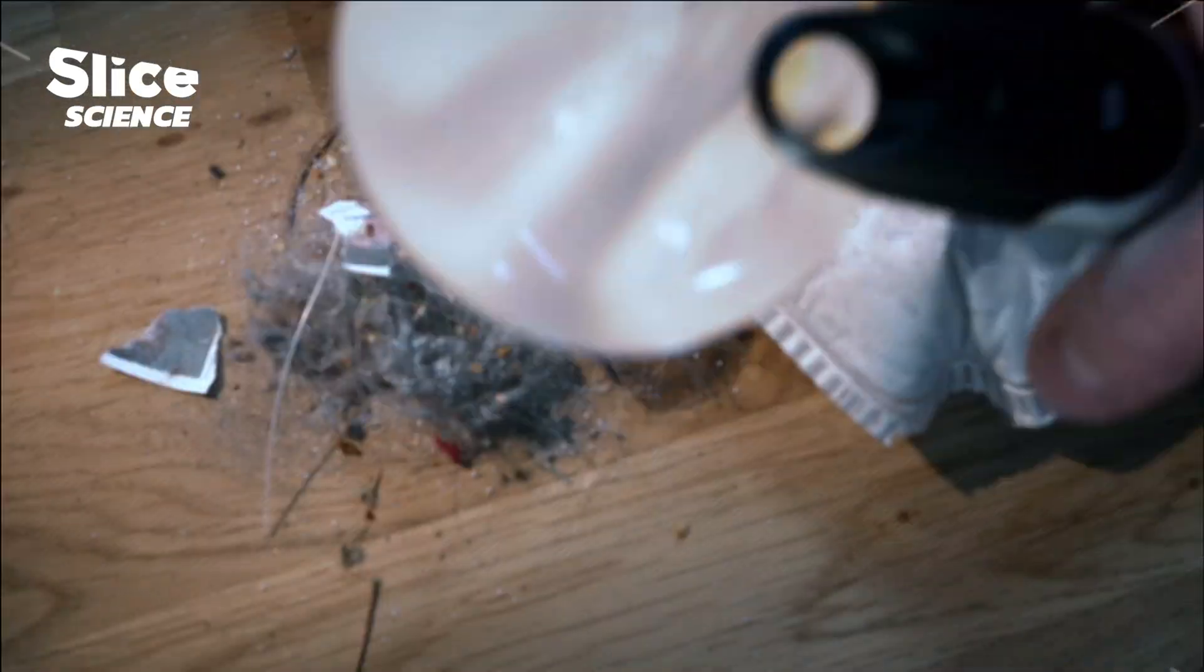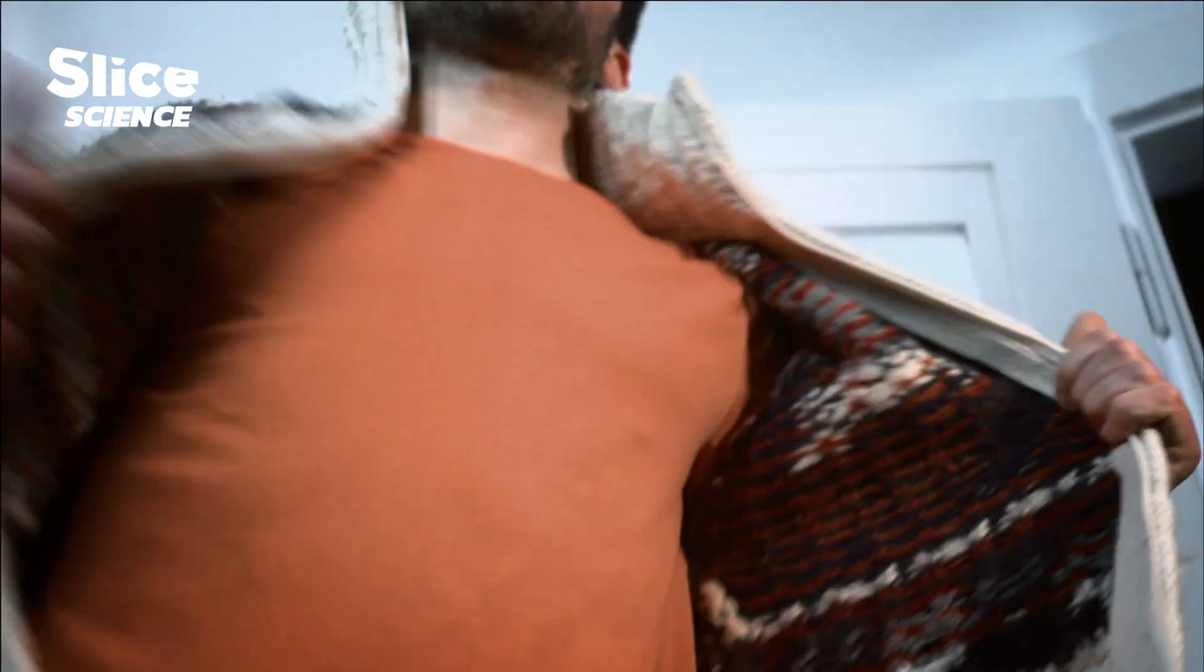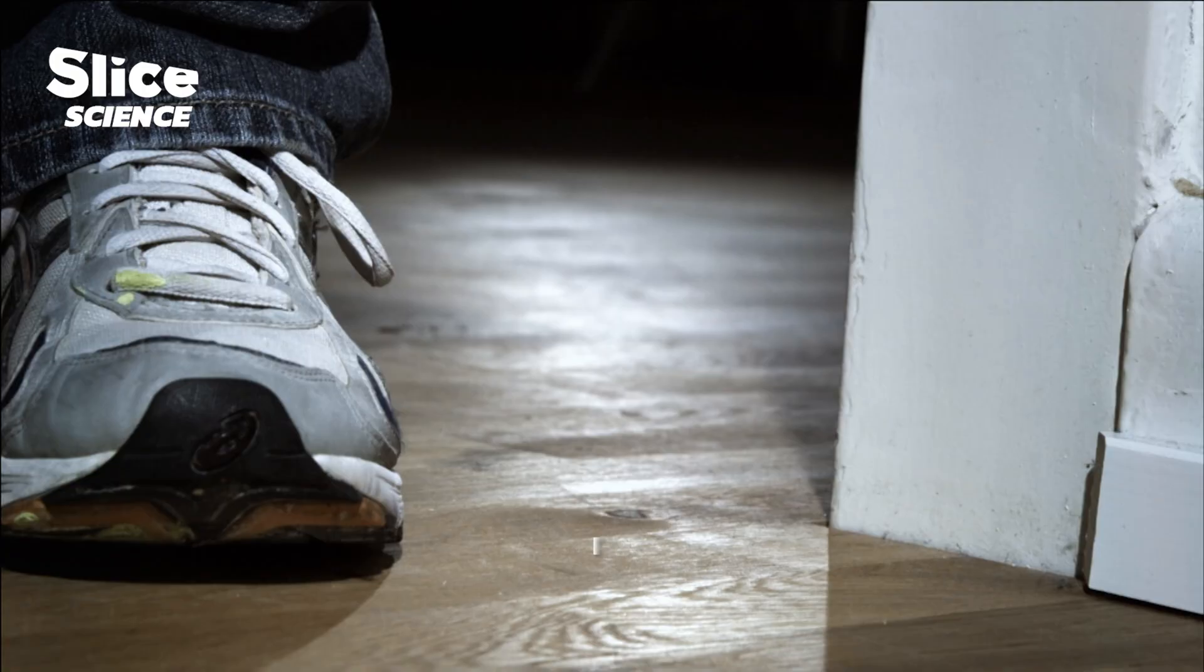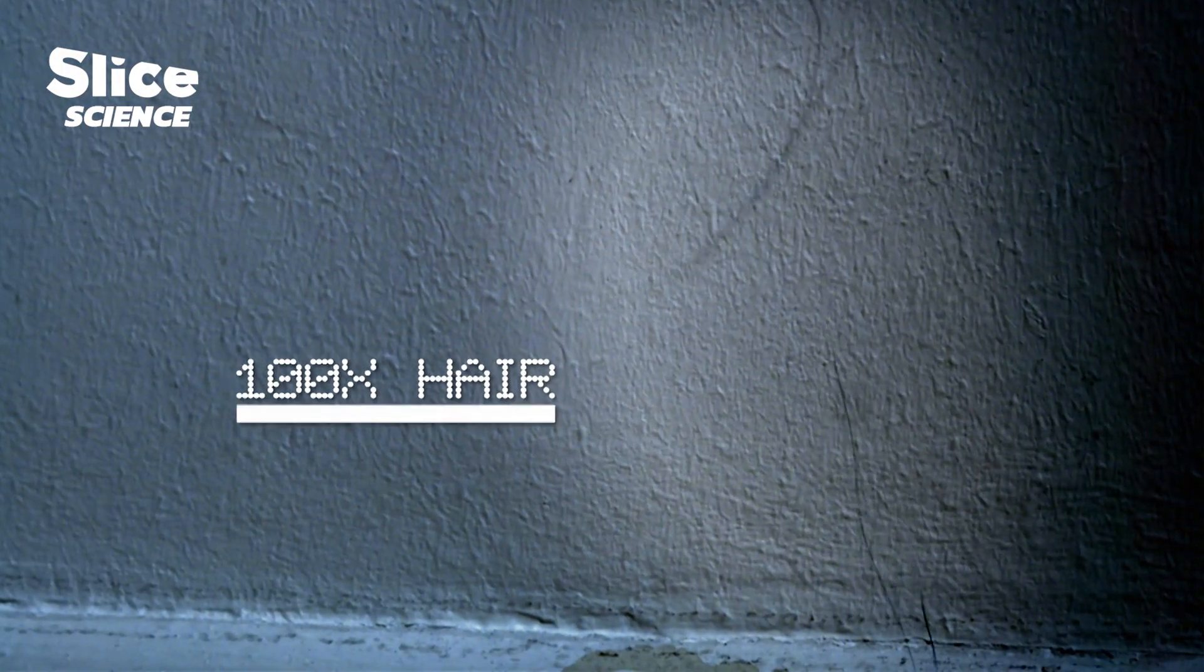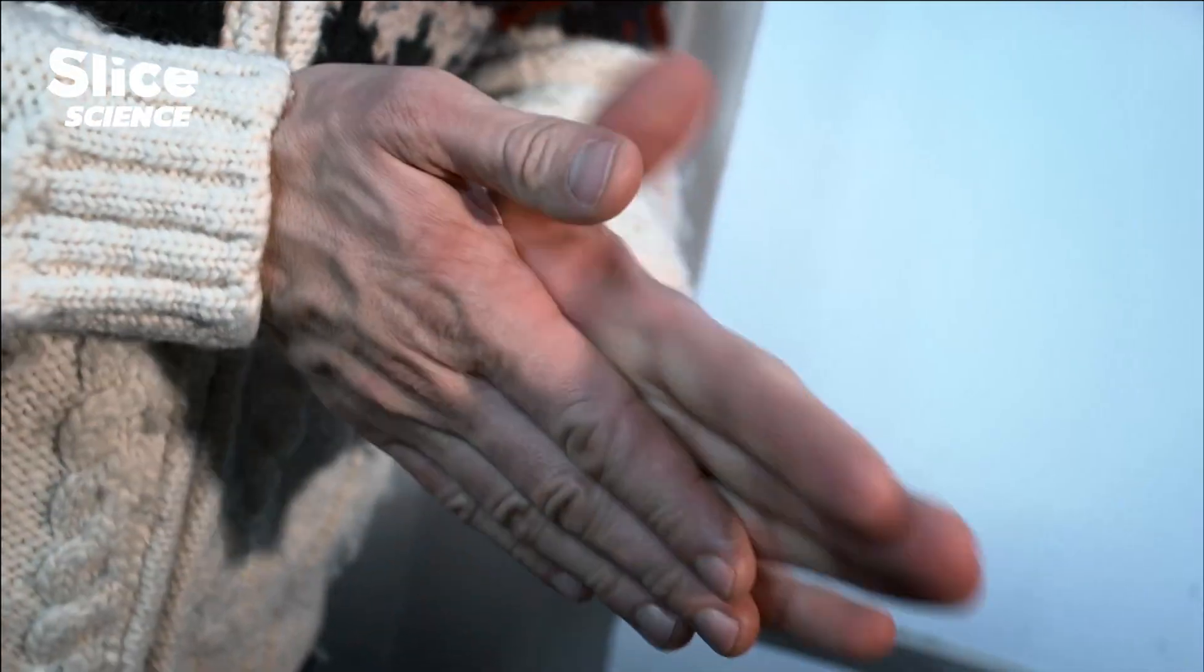So we actually produce most of the dust ourselves. We're veritable dust factories. Every day we shed more than 50 grams of textile fibers and lose around a hundred hairs, and we produce about half a kilogram of skin flakes a year.